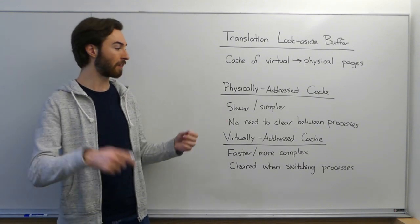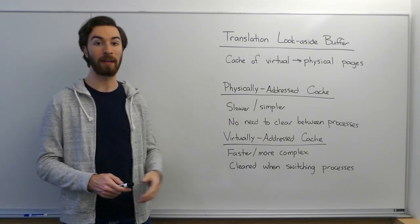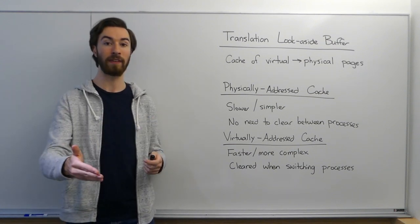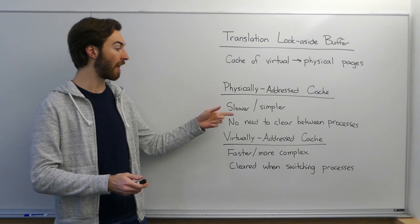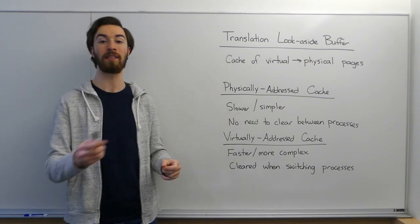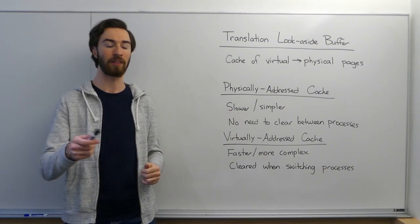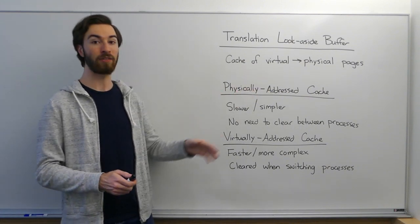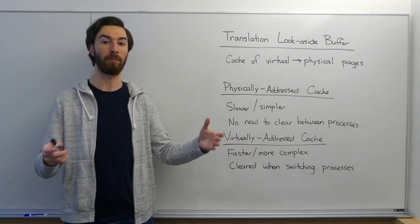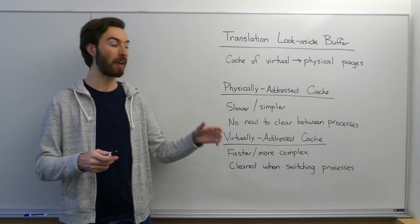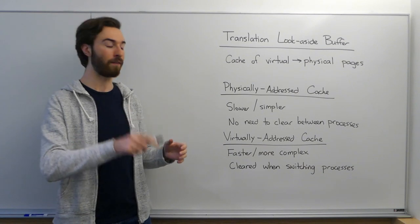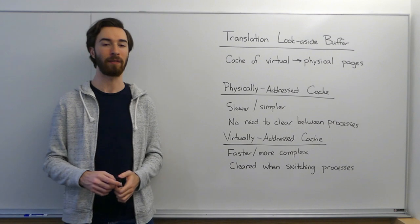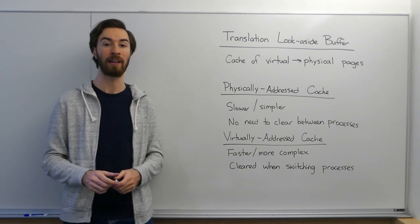The physically addressed cache that takes a physical address is slower but a bit simpler, because we just assume that we always translate our virtual address to a physical address before going to the cache. That makes it slower because translating the virtual address to the physical address takes time. However, because it's a physically addressed cache, we can be sure that all processes think the same way about physical addresses and what is in physical memory. There's no need to clear the physically addressed cache between different processes when we switch from one process to another.